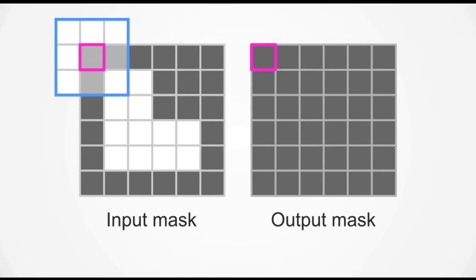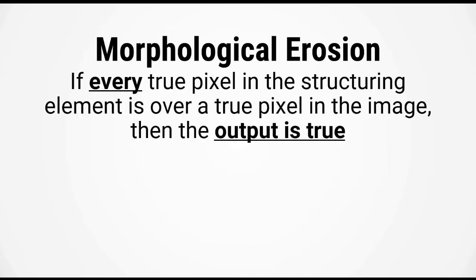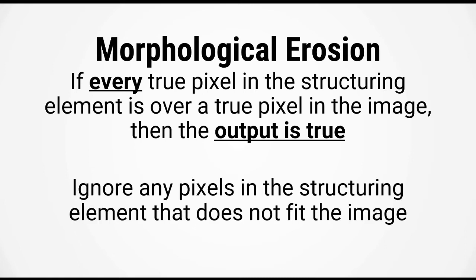The comparison that you make will depend on the type of operation. Let's first start with morphological erosion. In morphological erosion, if every true pixel in the structuring element is over a true pixel in the image, then the output pixel will be true. We will be ignoring any pixels in the structuring element that do not fit in the image.